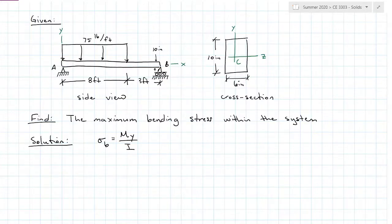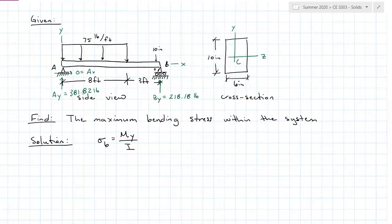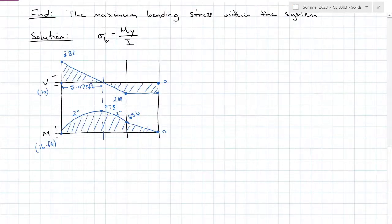First, I'll solve for the reactions at A and B. I find that A_y is 381.82 pounds acting up, and B_y is 218.18 pounds acting up. From here, I can draw my shear diagram and then get my moment diagram to find the maximum moment. From my moment diagram, I see that the maximum value in magnitude is 973 pound-feet. That is the M I'm going to use.